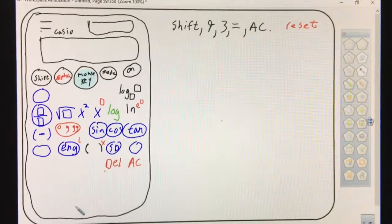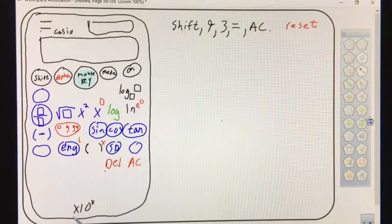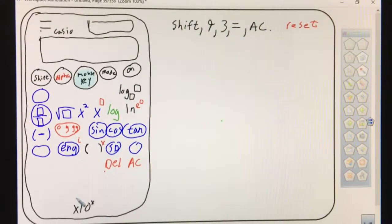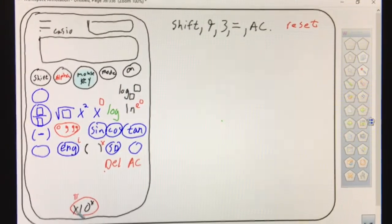Way down at the bottom, there's a times 10 to the X button. Look at that button. Just to the top of it is the pi symbol. So if you want to go in radian mode and type in the pi button, you can do that.